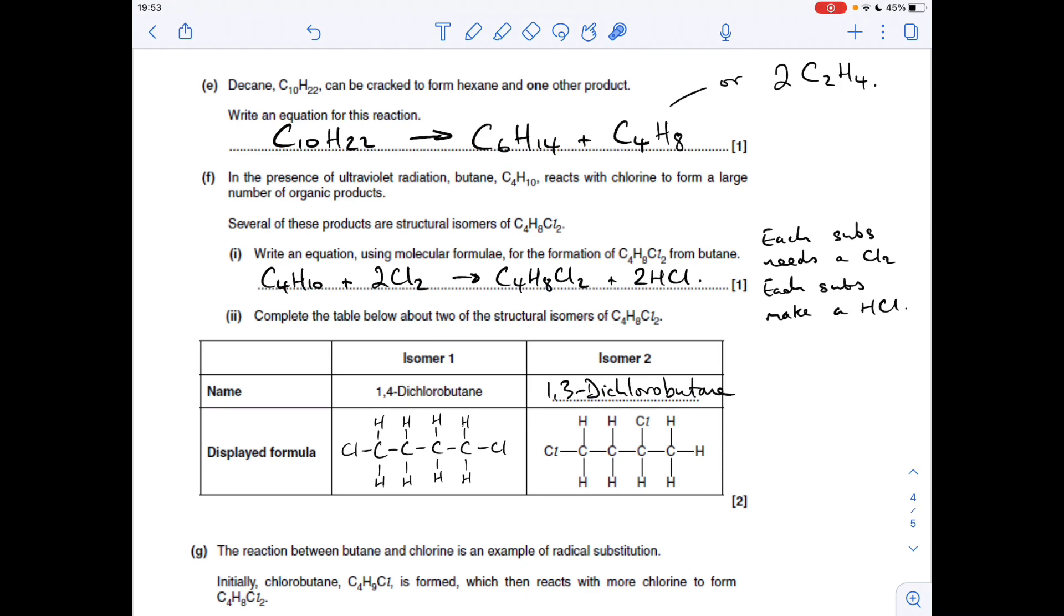Part F: write an equation using molecular formula for the formation of this dihaloalkane from butane. Every time you make a substitution, you need a halogen molecule—chlorine in this case—and every time there's a substitution, you make an HCl molecule. If we're doing a di-substitution here, we're going to need two chlorines and we're going to make two HCl, so the equation looks like that.